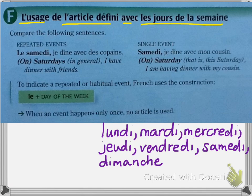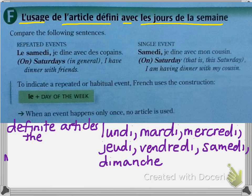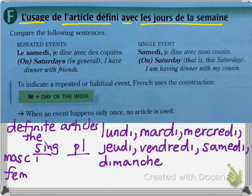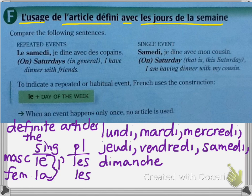Remember, the definite articles mean 'the.' We have the masculine, the feminine, the singular, and the plural: le, la, and the plural is les. Remember, le and la become l'apostrophe before a vowel or a silent h.